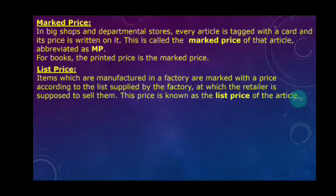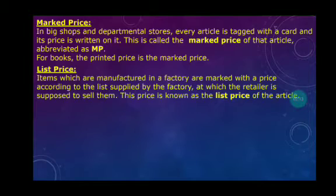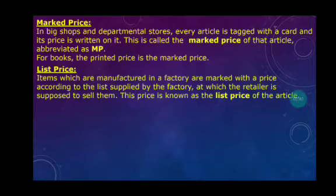Next define is list price. Items which are manufactured in a factory are marked with a price according to the list supplied by the factory at which the retailer is supposed to sell them. This price is known as the list price. The list price is slightly less than the marked price so that the retailer can also earn a profit.